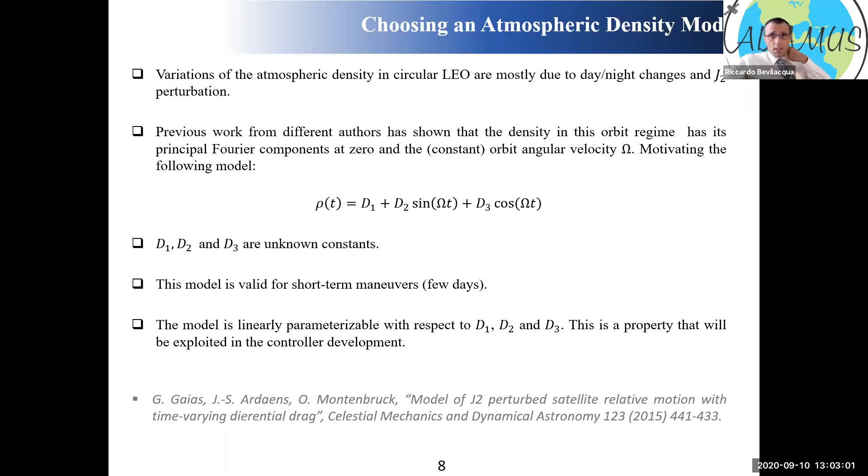We start from the biggest unknown, density. We can tell something about it even though we don't want to run an NRL M-Sys model or a Jackia-Bohmann model. We still know that on a given orbit that in this case will last about 90 minutes, that's the orbital period at the altitude of the ISS. So around that duration, we know that there are day-night variations that the satellite experiences. We can capture that behavior with these sinusoidal components. And then we have three constants here that are my unknowns. This is borrowed from a paper from Gaius published in 2015. This has been proven to be a good approximation of the density that your satellite experiences for a few days.